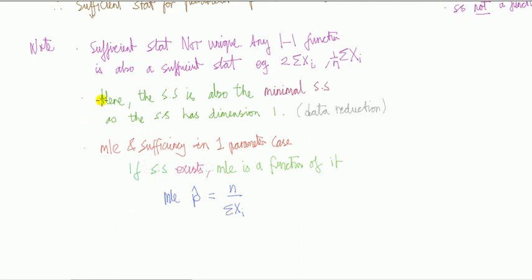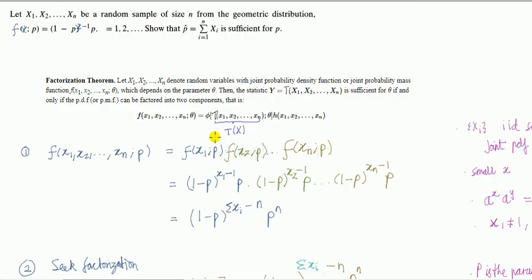That goes back to the first thing I said about sufficient statistic: it encapsulates all you need to know for inference. Here you can see, if we know sum of x_i's, then we don't need to know the individual x's to calculate MLE. The relationship between MLE and sufficiency can be seen in this factorization theorem.